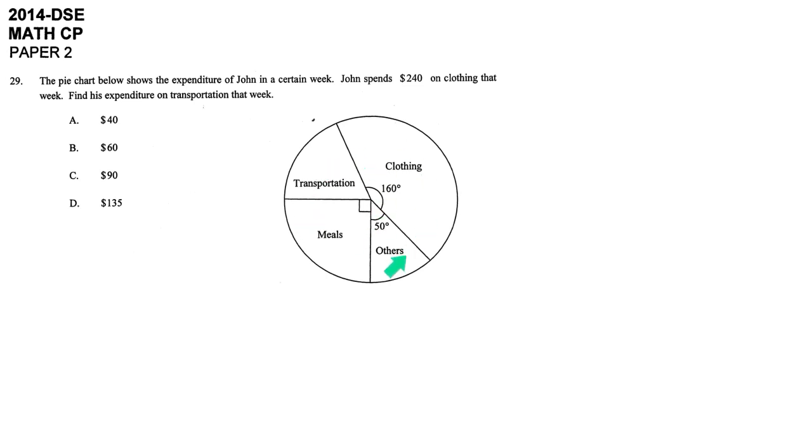The question gives you a pie chart and says that John spent $240 on clothing for this section. We have to find what is the expenditure for transportation.